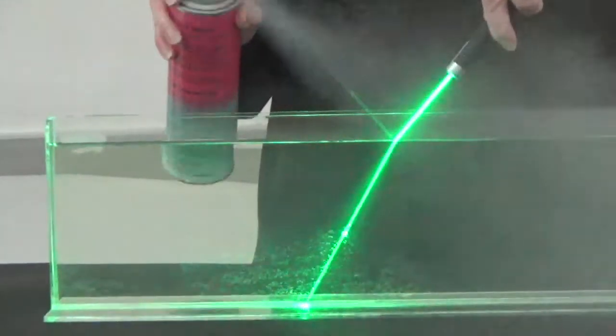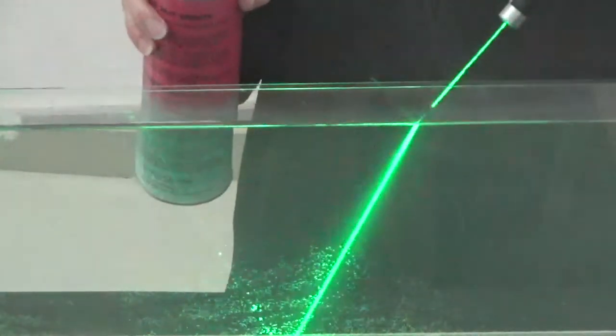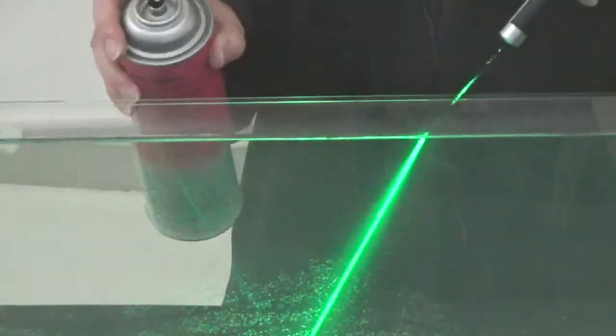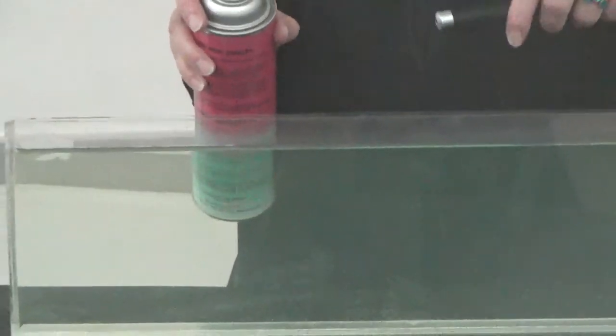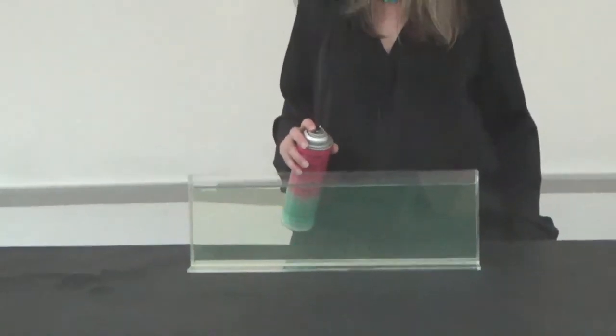You can see the refracted beam kinks towards the normal to the surface. The beam does not go straight at the air water interface, but it's kinked. It's not bent, it's kinked. It abruptly changes direction with a sharp angle, and it's kinked in the direction towards the normal because of Snell's law.